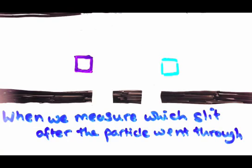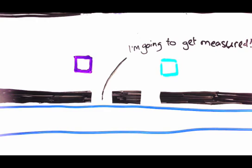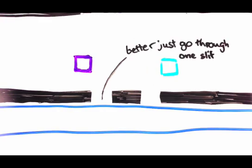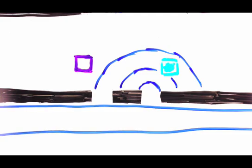When we measure which slit the particle went through, after it's already gone through, we don't get the interference pattern. The particle must know that we're going to measure it later, so it just goes through one slit. This seems crazy, but it gets worse.